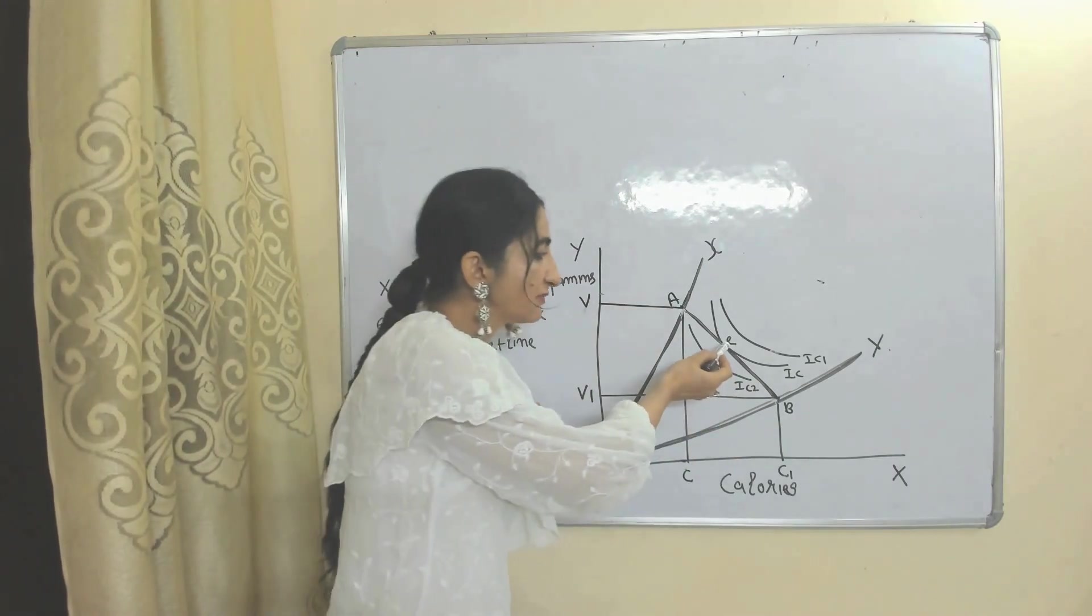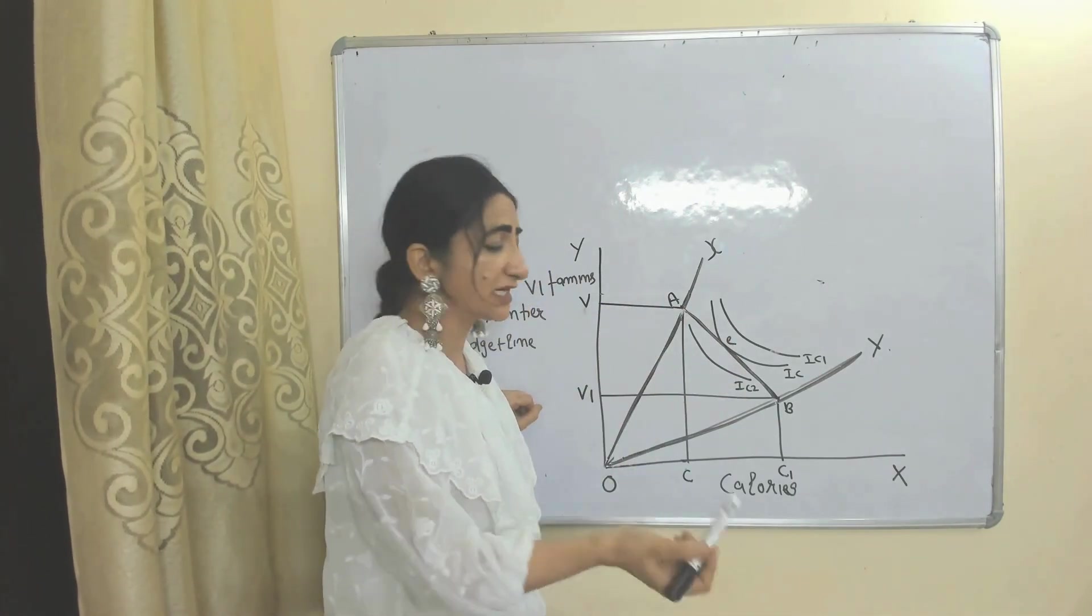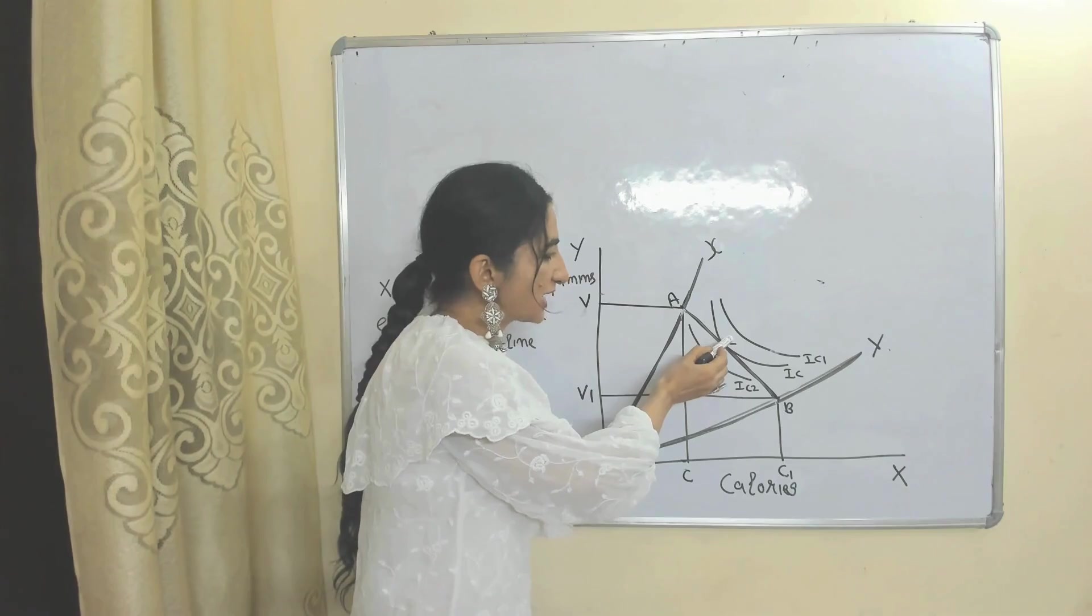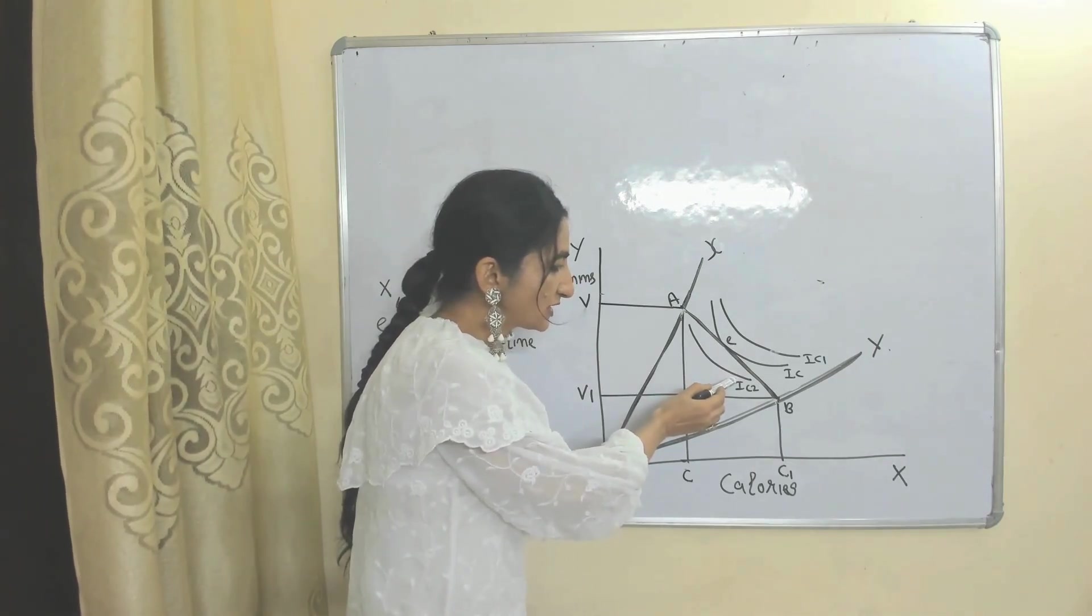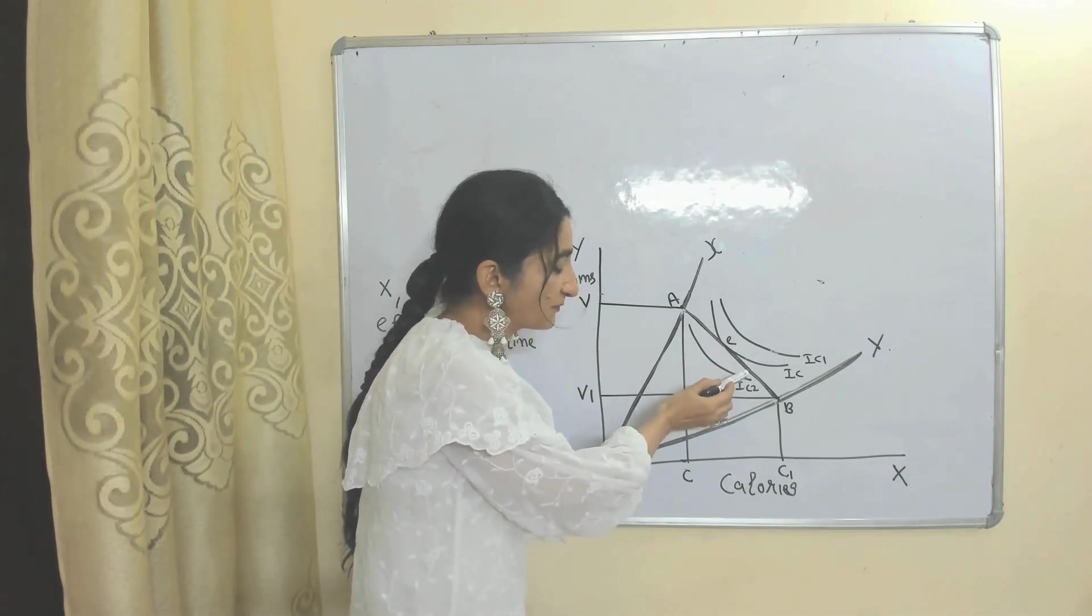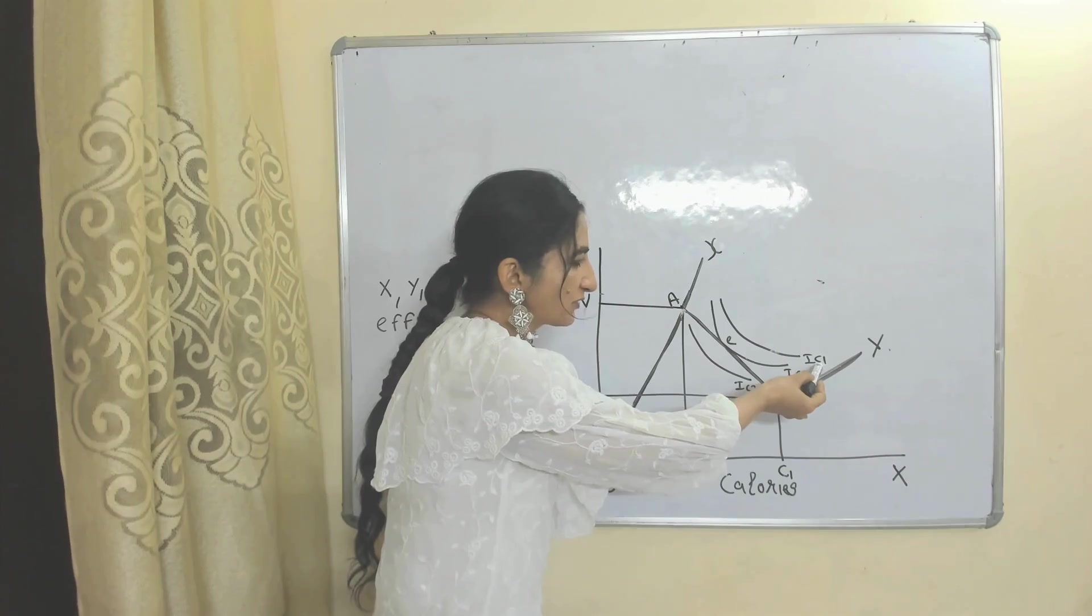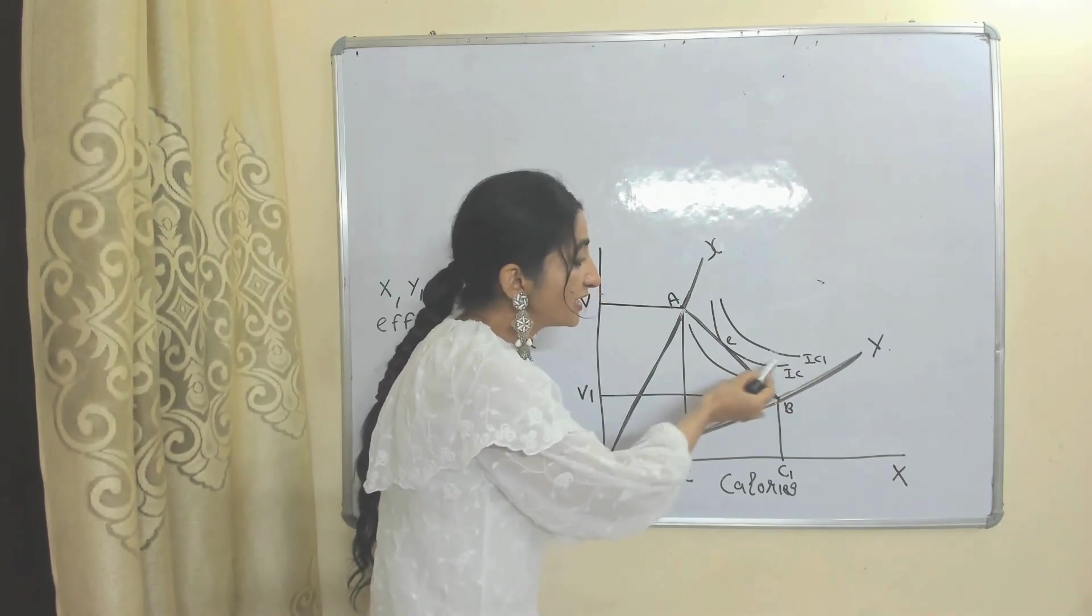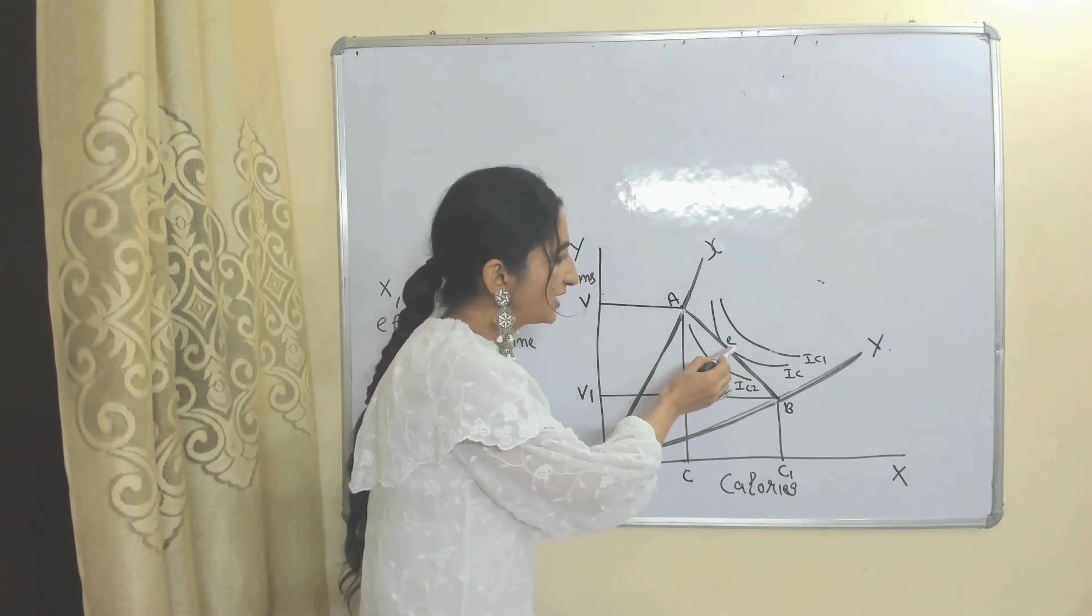But why is E the consumer equilibrium point? Because at this point the budget line is tangent to the indifference curve. The consumer cannot go to this lower indifference curve because it gives less utility. No doubt this higher indifference curve gives more utility, but the consumer cannot reach it because it crosses the budget constraint. So E is the consumer equilibrium point.